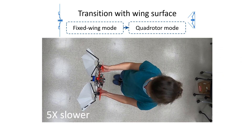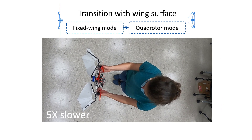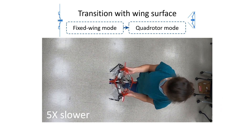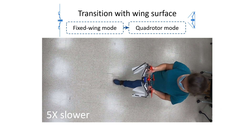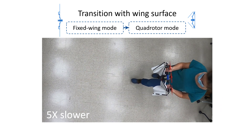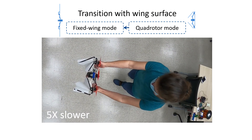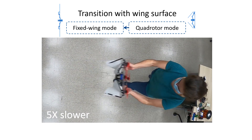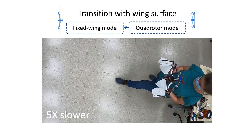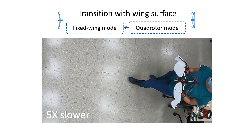We also tested with the addition of a wing surface. Here is the transition from fixed-wing to quadrotor, and the transition from quadrotor to fixed-wing.